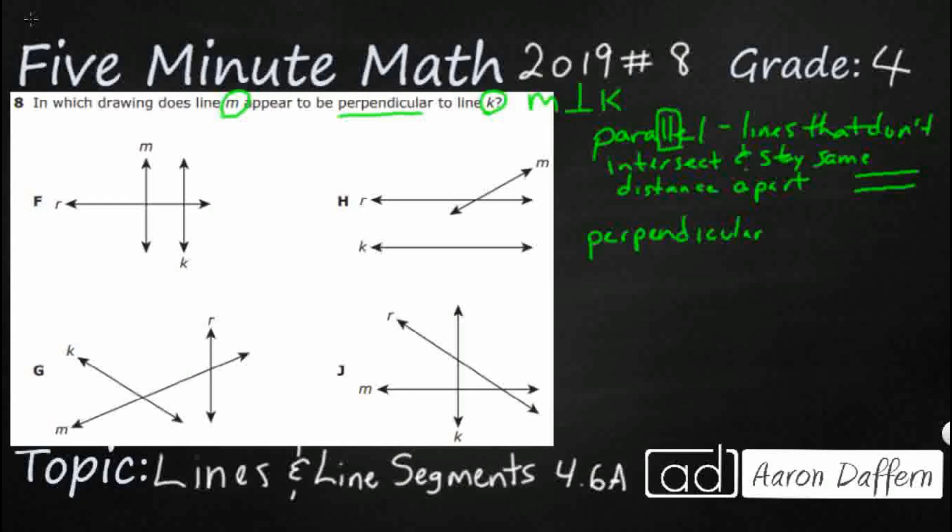So we're looking not for parallel, we're looking for perpendicular. These are intersecting lines - that means they do cross, they do touch, but they form a right angle.